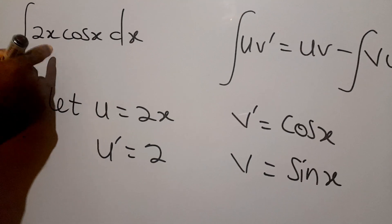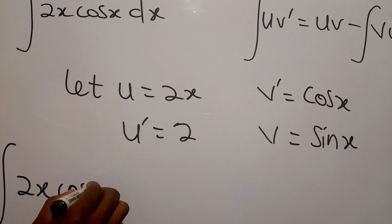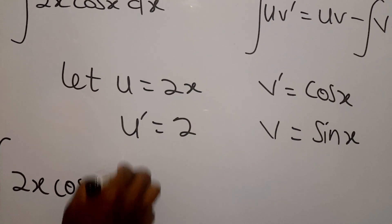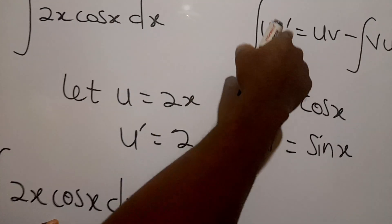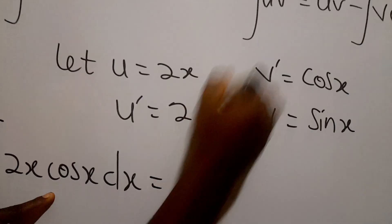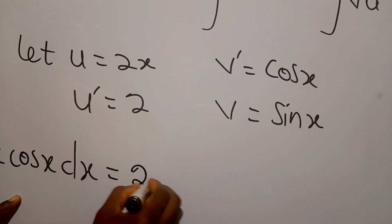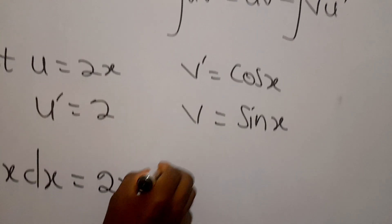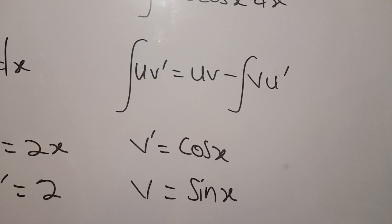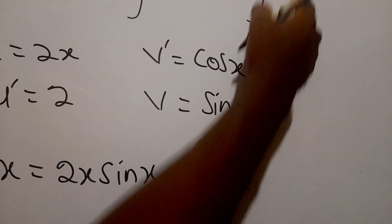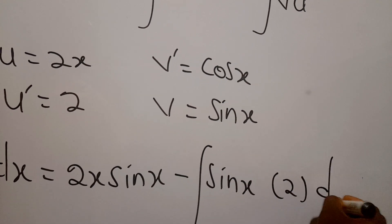So we can say the integral of 2x cos x dx — where 2x is u and cos x is v prime — will be equal to u times v: our u is 2x and our v is sine x. Then minus v which is sine x times u prime which is 2, dx.